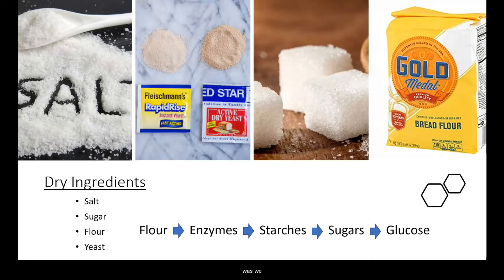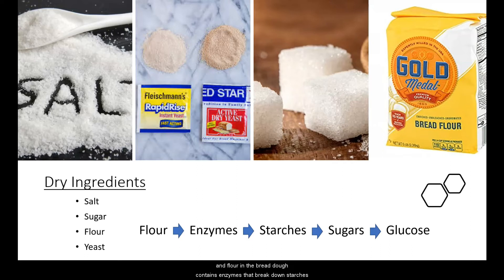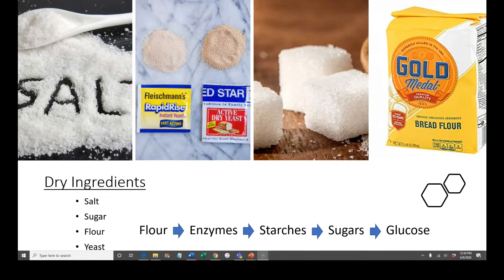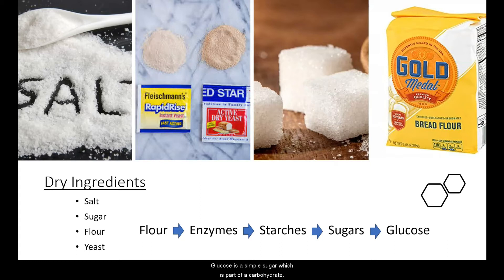The first thing we did is we combined our dry ingredients. We added salt into a bowl, sugar, and flour. Flour in the bread dough contains enzymes that are able to break down starches, converting them to sugars, which are then converted to glucose. Glucose is a simple sugar, which is part of a carbohydrate.